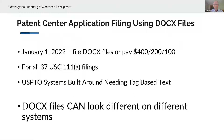As many of you know, the US Patent Office is requiring you to file using Docx files starting January 1, 2022, or pay an extra fee of $400 if you're a large entity, $200 for small, and $100 for micro entity. Docx is just that file extension at the end of a document file name that stores a format including little tags that tell you how to display the document.